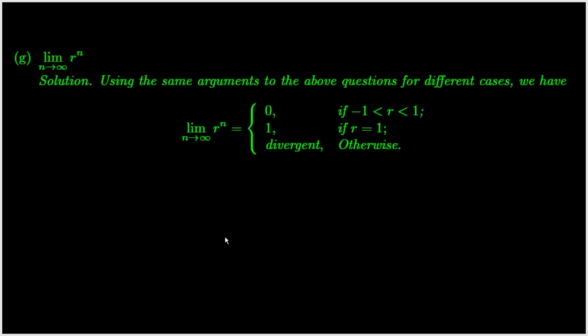We now work on question 5g. Motivated by the above questions, we can see that the limit equals 0 when r is strictly between negative 1 and 1. The limit equals 1 when r equals 1. Otherwise, the sequence is divergent.